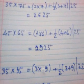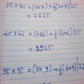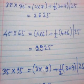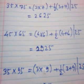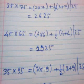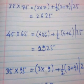Similarly, 45 into 65. What we will see here, 4 into 6, 24, plus half of 4 plus 6 is 5, that is 24 plus 5, 29 and 25 as usual.